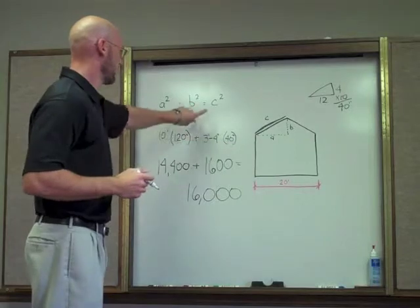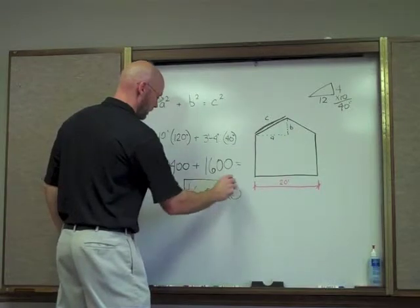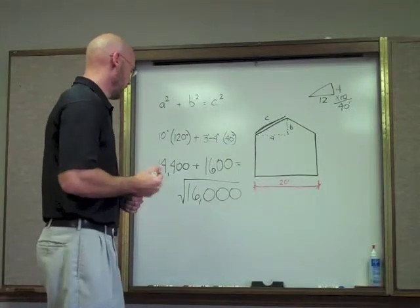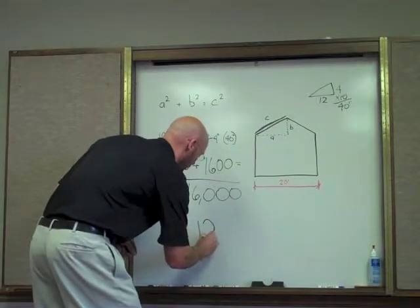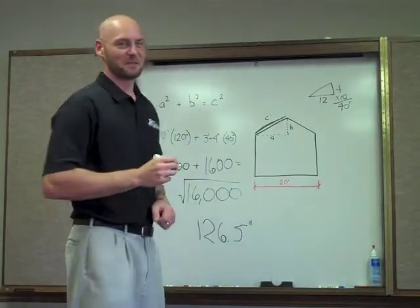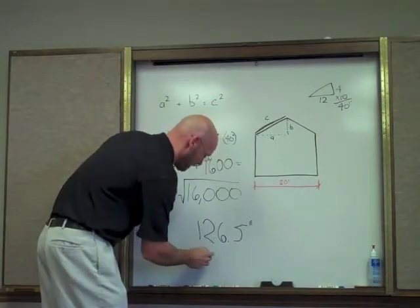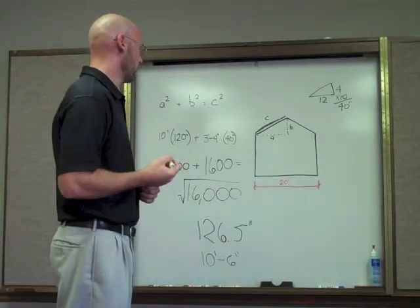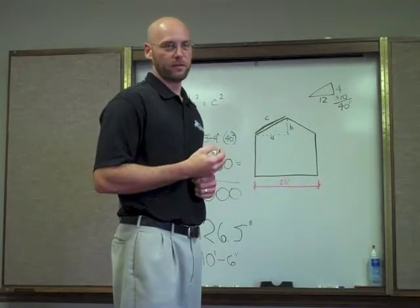So going back to Pythagorean theorem, c squared, we're going to get the square root of 16,000, is going to give us our length that we're looking for. And, of course, I'm brilliant and can do it in my head. I didn't use a calculator earlier at all to find this out. Equals 126.5 inches, which equates to 10 foot 6 inches. So now we know that we can build and ship a 10 foot 6 long roof panel that will fit their building perfectly.